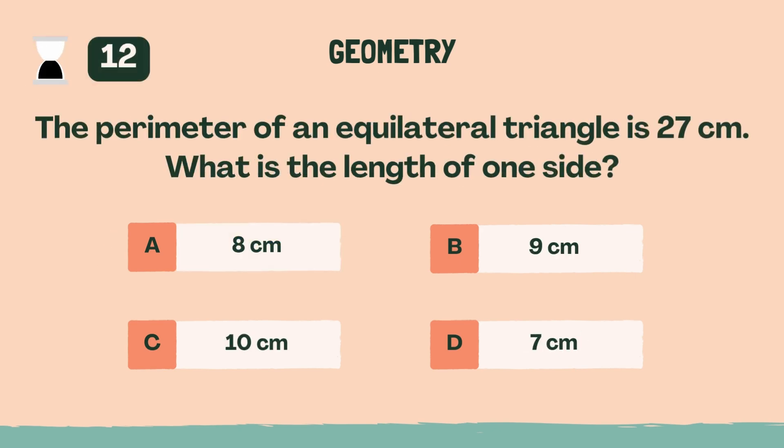The perimeter of an equilateral triangle is 27 centimeters. What is the length of one side? B, nine centimeters.